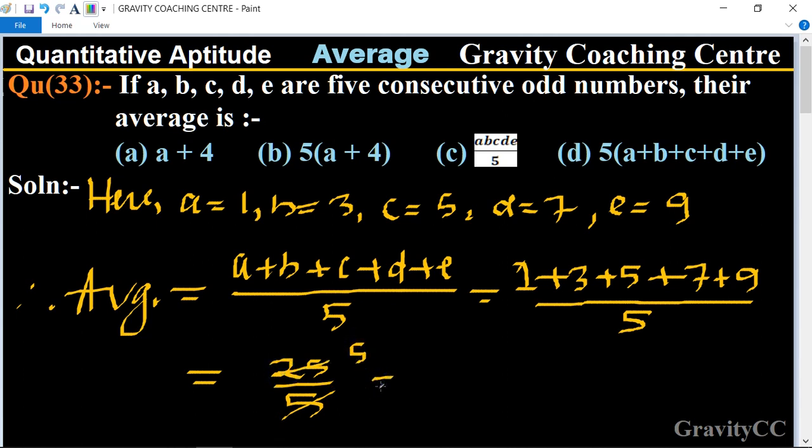So 25 equal to 5. So 5 is not in the option, so we can change it. 1 plus 4, and with 1 replace by a, so a plus 4, which is the required answer. So option a is the correct answer.